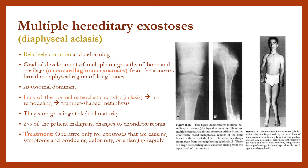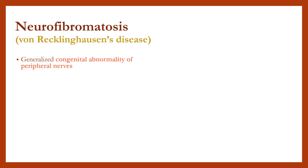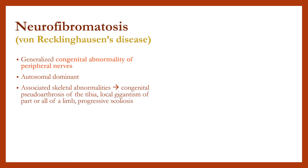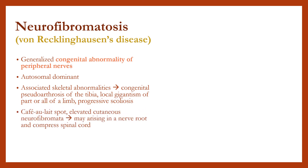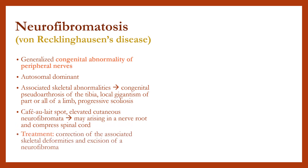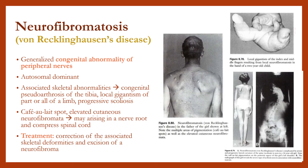Neurofibromatosis is a generalized congenital abnormality of peripheral nerves. It is autosomal dominant and associated with skeletal abnormalities. Café-au-lait spots are present, along with elevated cutaneous neurofibromata. Treatment involves correction of associated skeletal deformities and excision of neurofibromata.